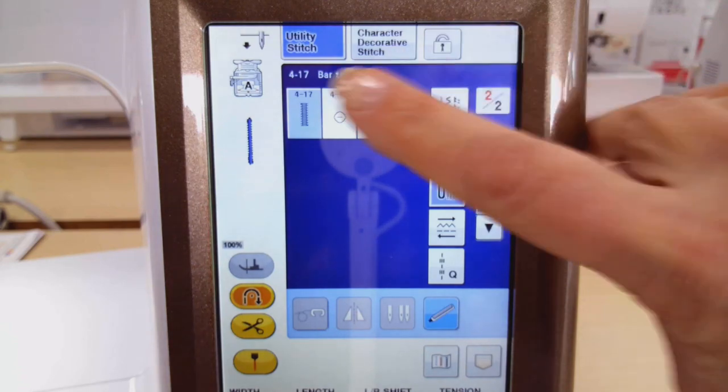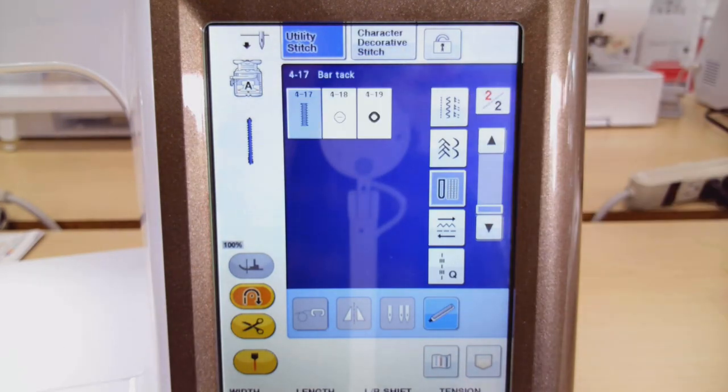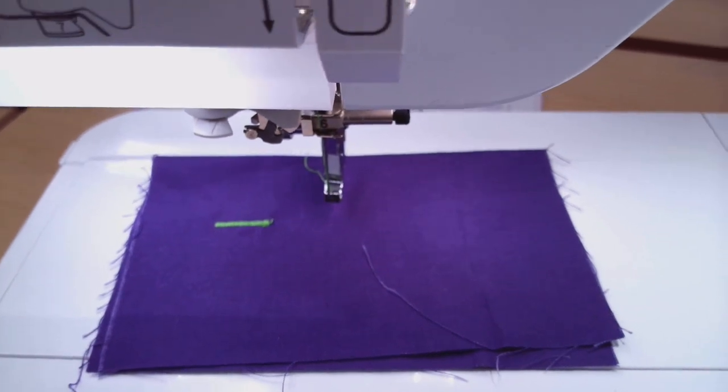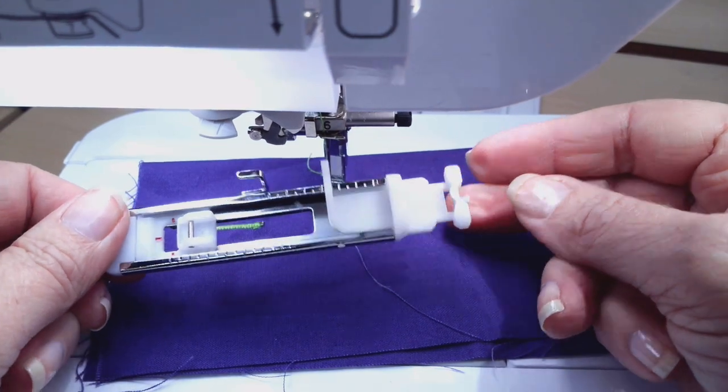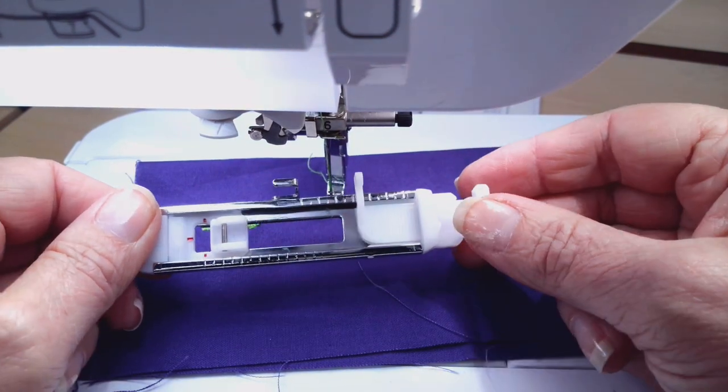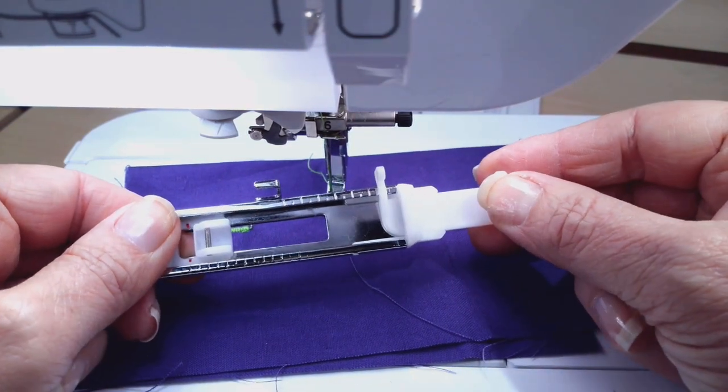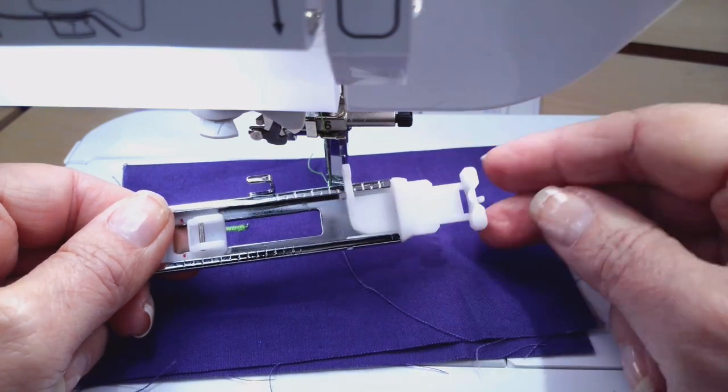You'll notice that we are being told to use the A foot so let me show you how we do that. I'll come in here and give you a close-up view. So this is our A foot and generally we use this for our buttonhole and we would open up this back portion here and put our button in here.